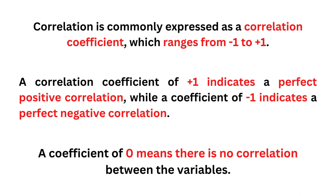Correlation is commonly expressed as a correlation coefficient, which ranges from -1 to +1. A correlation coefficient of +1 indicates a perfect positive correlation, while a coefficient of -1 indicates a perfect negative correlation. A coefficient of zero means there is no correlation between the variables.